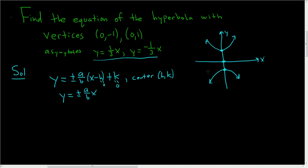So we have a already. A is the distance from the center to the hyperbola. So a is equal to 1.